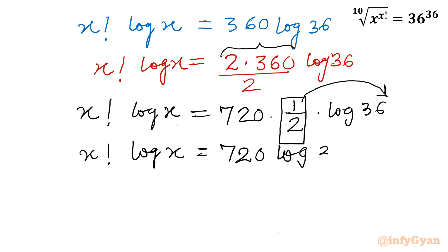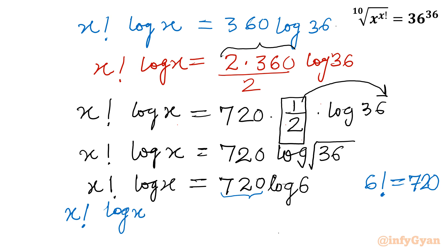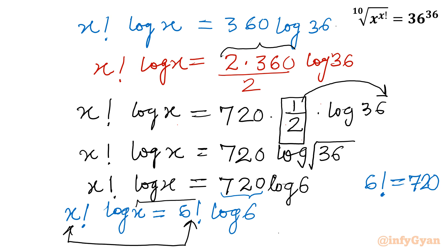Since 36^(1/2) is the square root of 36, that equals 6. So the right-hand side becomes 720 · log 6. As per factorial rules, 6! = 720, so we can write 720 as 6 factorial. Therefore x factorial · log x = 6! · log 6. Comparing both sides, x equals 6 — confirming the result from Method 1 as well.